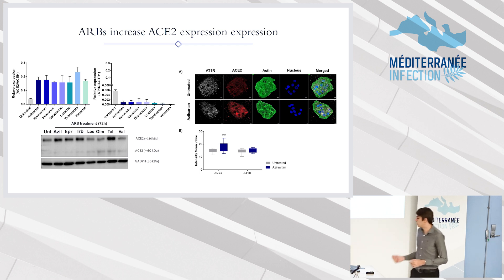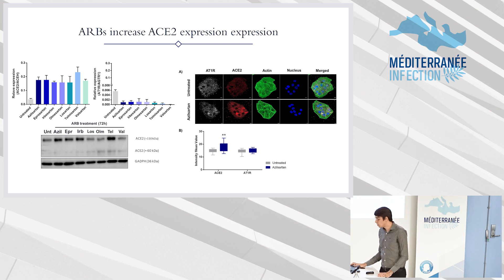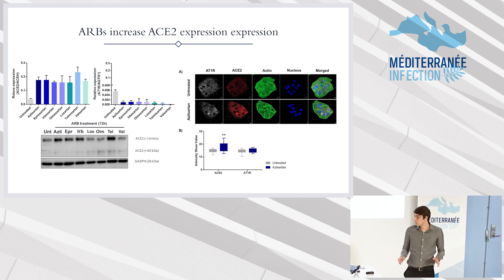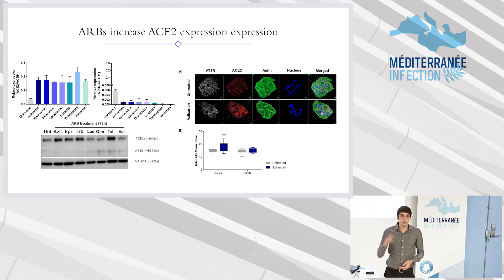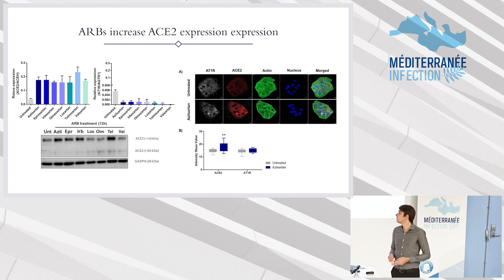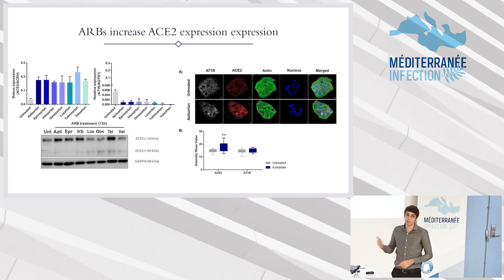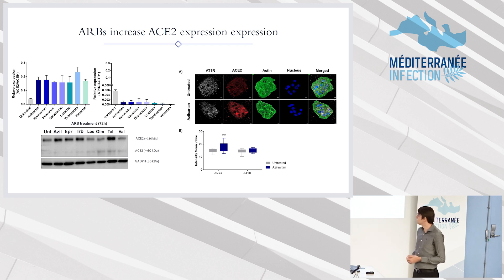We observed that for ACE2. After that, we kept this treatment for 72 hours and infected the cells for a further 24 hours. We collected the supernatant to check the viral release, and we also did a Western blot of the infected cells. We have a first increase of viral release by PCR for aziosartan, eprosartan, and ibsartan — which is exactly the same as what we see with increased spike protein inside the cells. Talking about infective particles, aziosartan and ibsartan had increased release of infective particles.